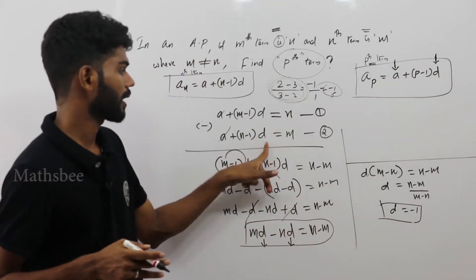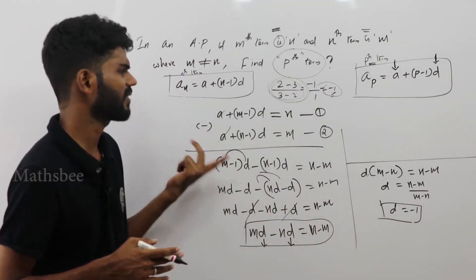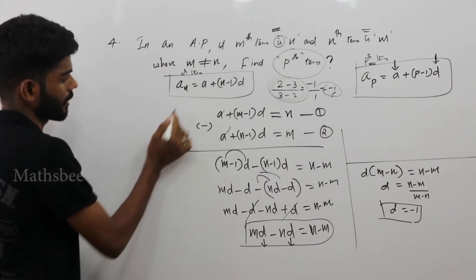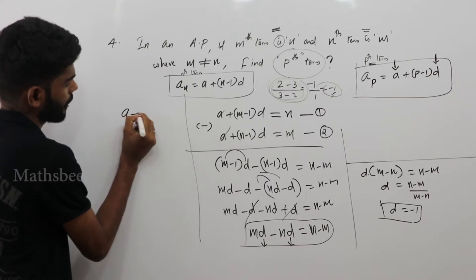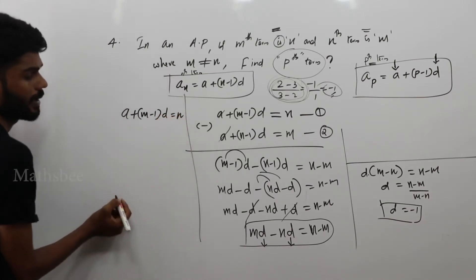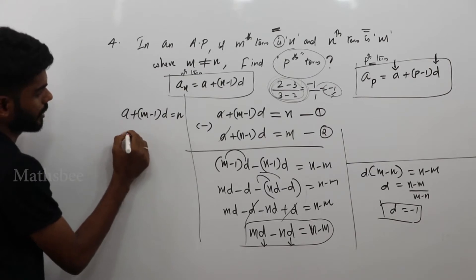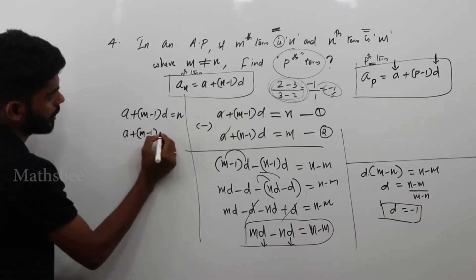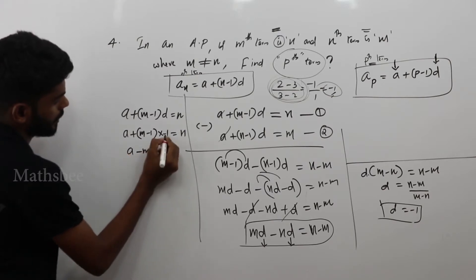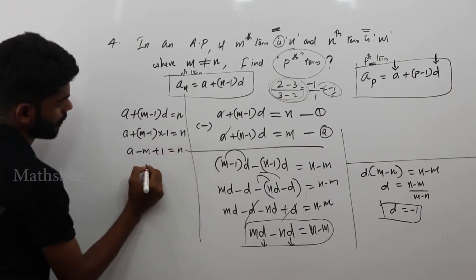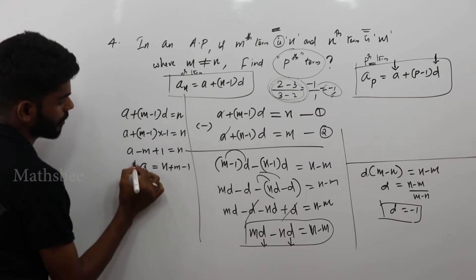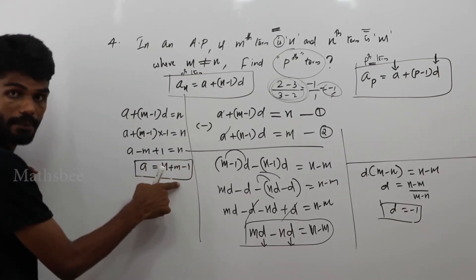Now that we have found D, we will substitute D into equation 1. So: A plus (M minus 1) times (minus 1) equals N. Simplifying: A minus M plus 1 equals N. Solving for A: A equals N plus M minus 1.